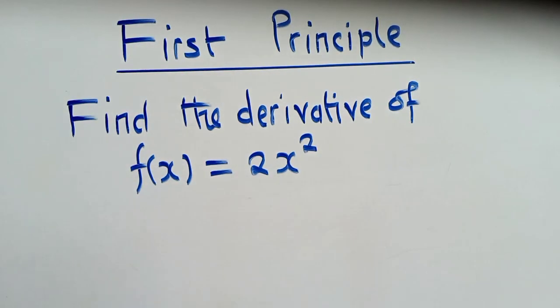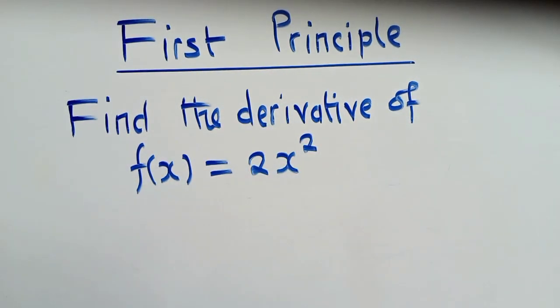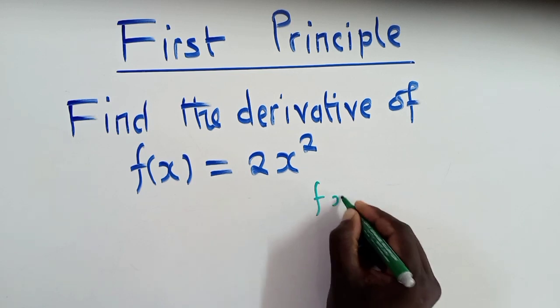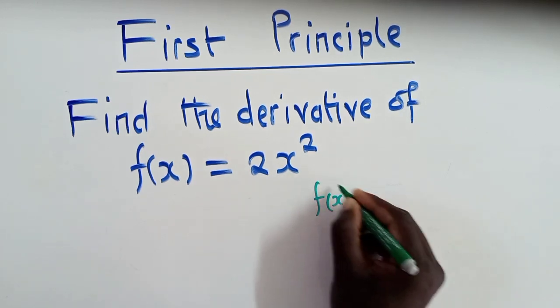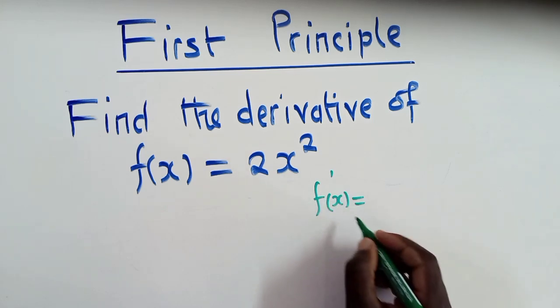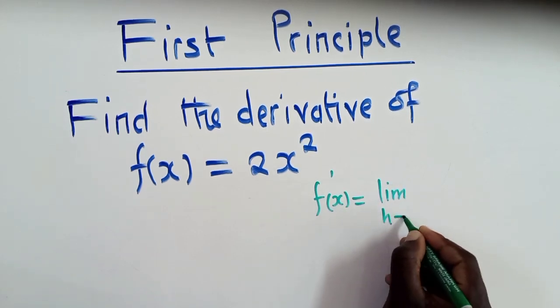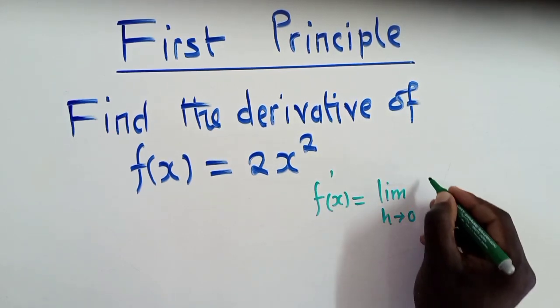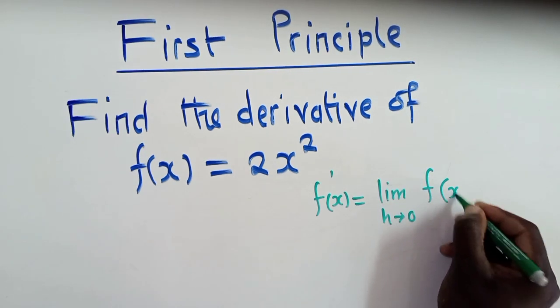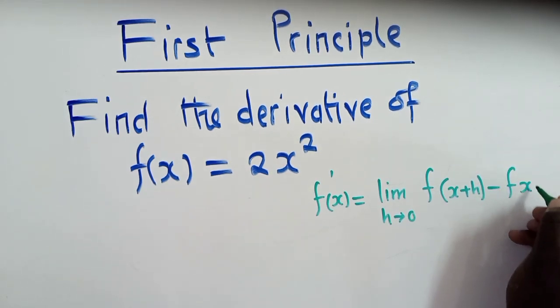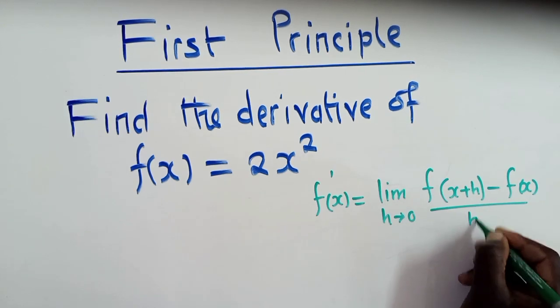Now, what if you are asked to use first principle? How are you going to find the derivative? The first thing must be to find or to write the formula. So the formula looks like this: f'(x) is equal to limit as h approaches 0, and then here we say f(x+h) minus f(x). So this is the formula over h.